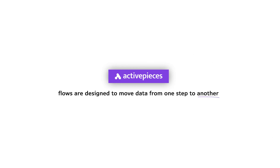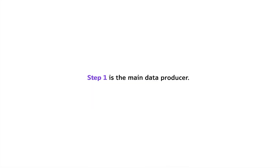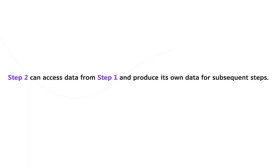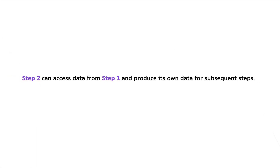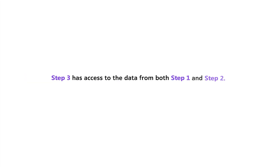In ActivePieces, flows are designed to move data from one step to another. Each step in your flow can access the data produced by the steps before it. Here's how it works: Step one is the main data producer — this data is available for all the following steps. Step two can access data from step one and produce its own data for subsequent steps. Step three has access to the data from both step one and step two. This is how ActivePieces lets data flow through the steps in your automation, ensuring that each action has the information it needs to perform its tasks.